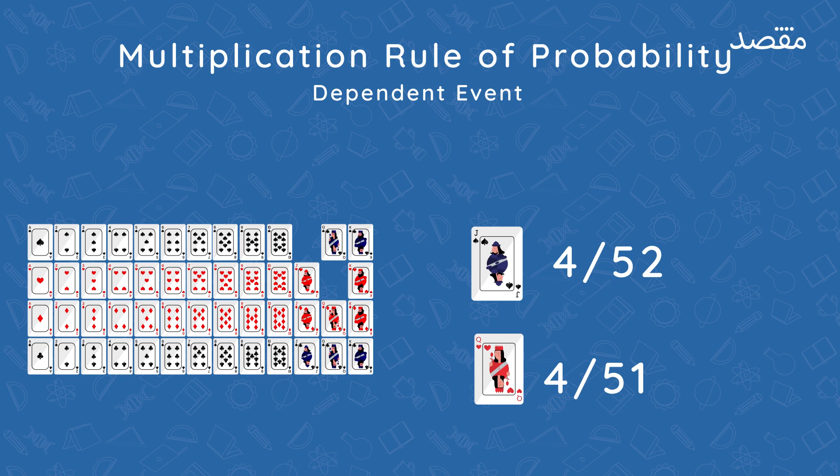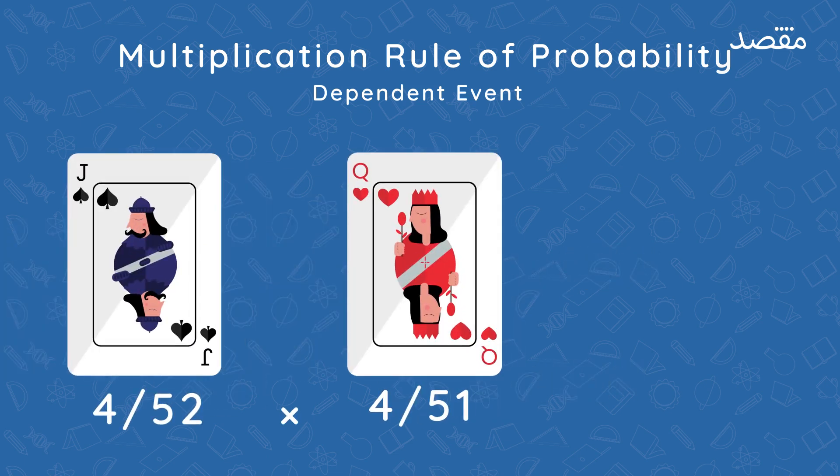So now total cards are not 52, but one less. So the denominator is also 51. We'll multiply these two probabilities together and we'll get a probability of 16 out of 2652.